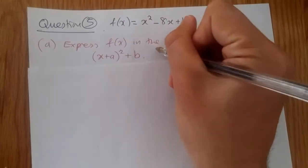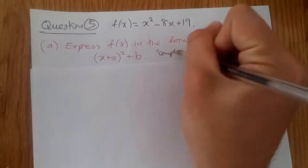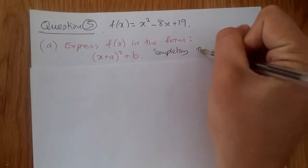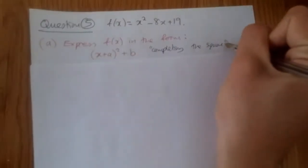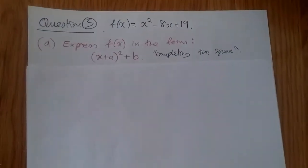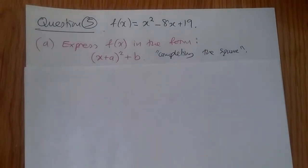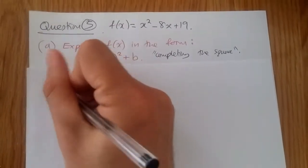So if you remember, this form is known as completing the square. Okay, so let's have a shot at this. So now, how to do this? Well, it's a very straightforward method. So let's do this, part A.